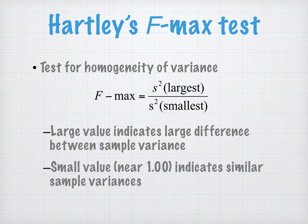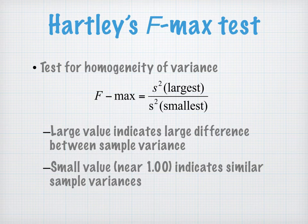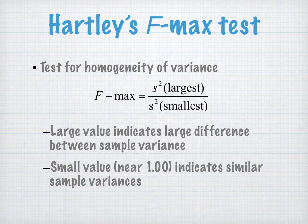When you have a really large Fmax value, that indicates there's a large difference between the sample variances, which could be problematic. If you're getting a value near one, that means your variances are very, very close — your largest number is not much bigger than your smallest number. We're hoping for something small, close to one, when doing this homogeneity of variance test.